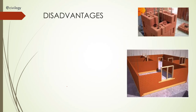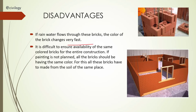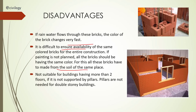The disadvantages of interlocking bricks: if rainwater flows through these bricks, the color changes very fast, and it is difficult to ensure the same colored bricks for the entire construction. If painting is not planned, all bricks must have the same color, which means they all have to be made from soil at the same place — very difficult. They are also not suitable for buildings having more than two floors if constructing without pillars.